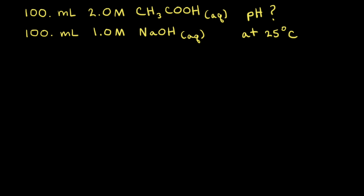Let's look at a reaction between a weak acid, acetic acid, and a strong base, sodium hydroxide. We have 100 milliliters of a 2.0 molar solution of aqueous acetic acid mixed with 100 milliliters of a 1.0 molar solution of aqueous sodium hydroxide. Our goal is to find the pH of the resulting solution at 25 degrees Celsius.